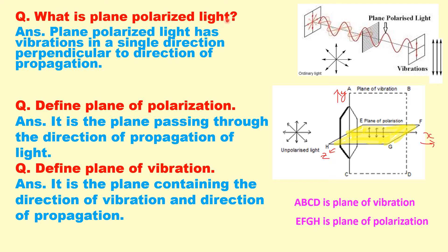What is plane polarized light? Plane polarized light has vibrations in a single direction perpendicular to the direction of propagation. Ordinary (unpolarized) light has electric field vibrations in all directions, but when passed through a polarizer or polarized sheet, we get vibrations only in one direction — for example, the vertical direction.